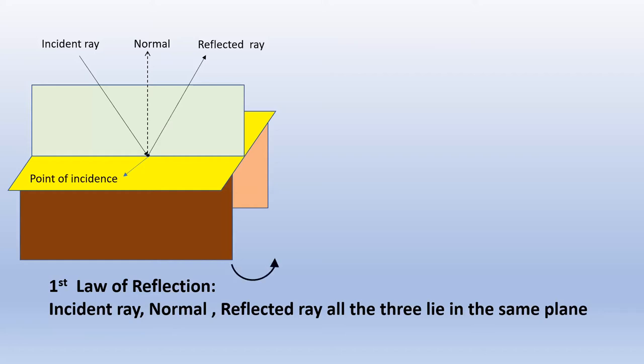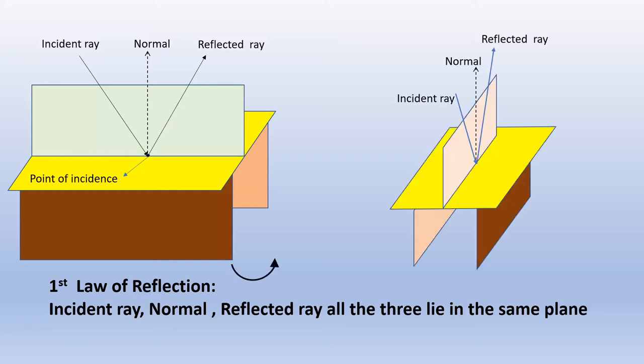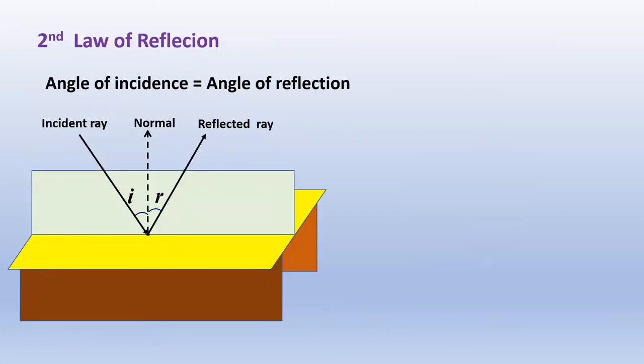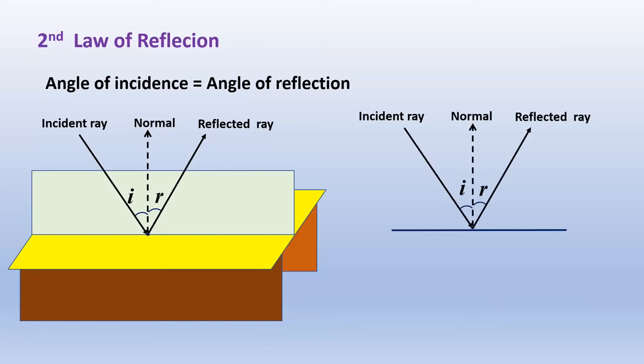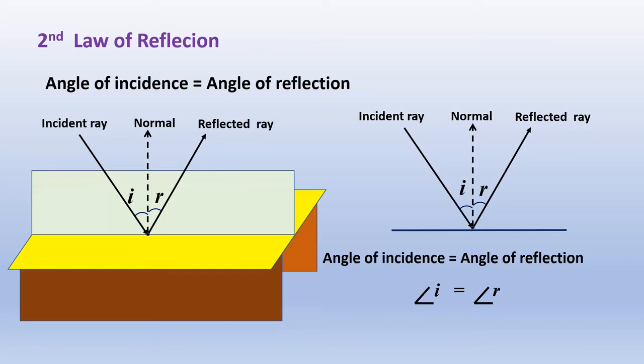If you rotate this table, we can see that the incident ray, normal, and reflected ray are in the same plane. The second law of reflection says that the angle of incidence is equal to the angle of reflection — I should be equal to R.